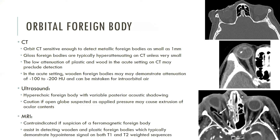Penetrating orbital injury from a foreign body accounts for approximately 30% of ophthalmic complaints in the emergency department. Long-term complications include endophthalmitis and vision loss. Orbital CT is sensitive enough to recognize metallic foreign bodies as small as one millimeter. The majority of glass foreign bodies are hyperattenuating and are detectable on CT unless very small. The low attenuation of plastic and wood may preclude detection on CT unless the foreign bodies are of significant size. Wooden foreign bodies in the acute setting may demonstrate attenuation of negative 100 to negative 200 Hounsfield units and can be mistaken for intraorbital air. Sonographic findings include a hyperechoic foreign body with variable posterior acoustic shadowing, though ultrasound should be used cautiously if an open globe injury is suspected.